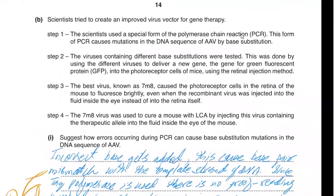Scientists improved the virus vector for gene therapy. Step one: a special form of PCR causes mutations in the DNA sequence of AAV by base substitution, where one base replaces another. Step two: viruses containing different base substitutions were tested by using them to deliver the green fluorescent protein (GFP) gene as a screening tool into the photoreceptors of mice using the retinal injection method.